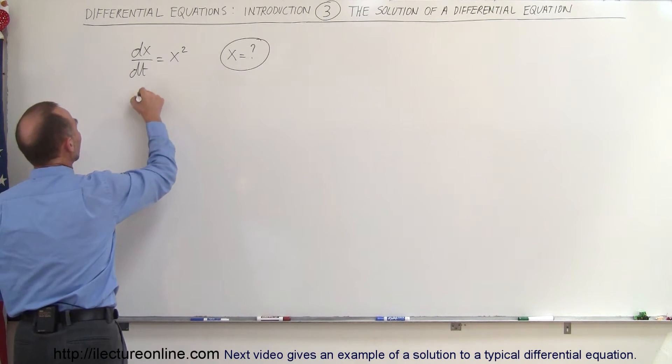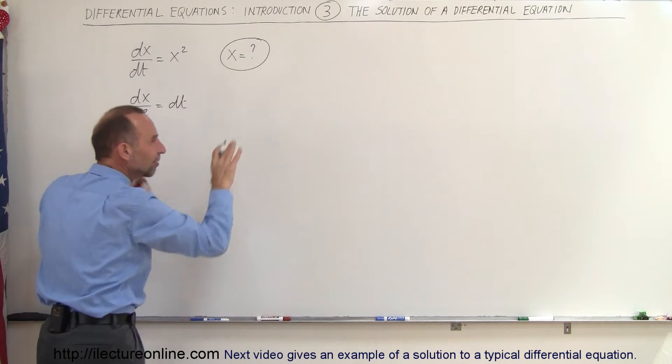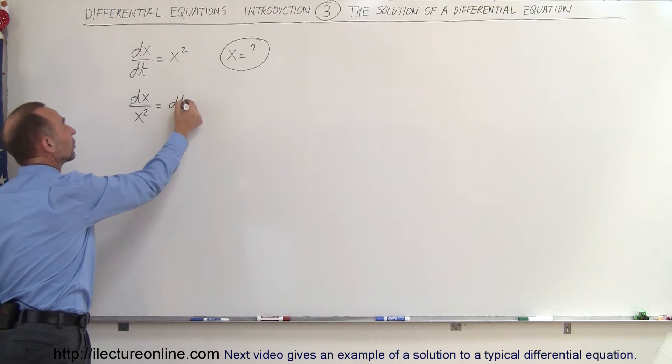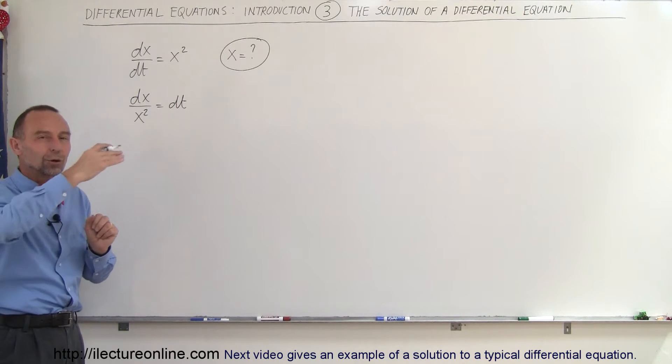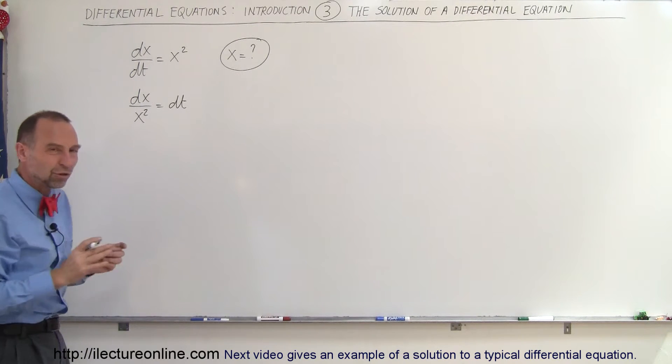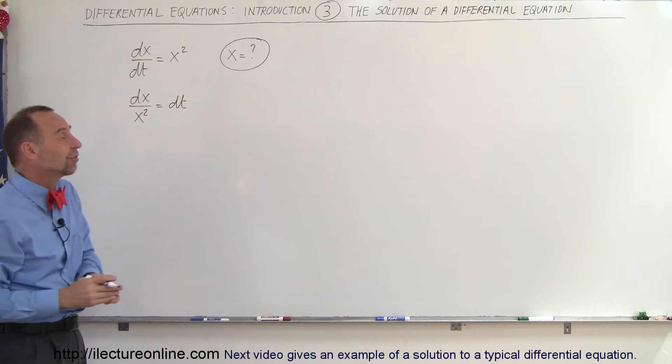So the first thing we're going to do is write it as dx divided by x squared equals dt. So now we separate the variables, all the x is on the left side and all the t's are on the right side. And that is one of the techniques, but don't worry too much yet about this technique. We'll go through all the techniques very systematically in future videos. Here we just want to get a feel of what a solution looks like and what it means to solve a differential equation.